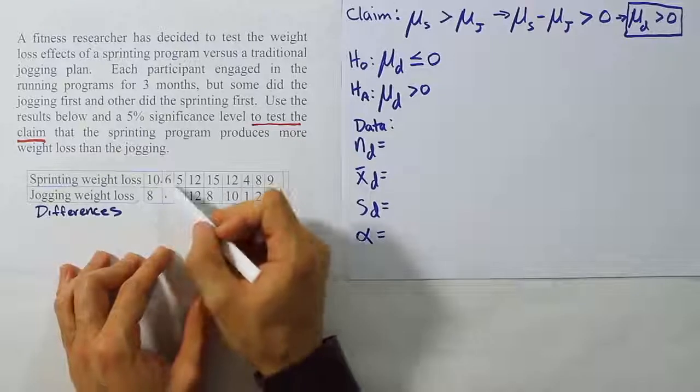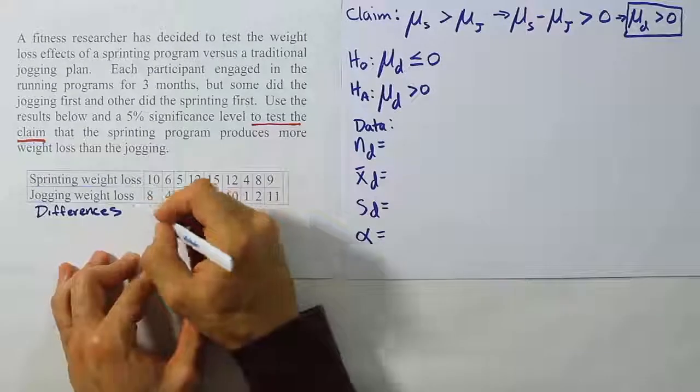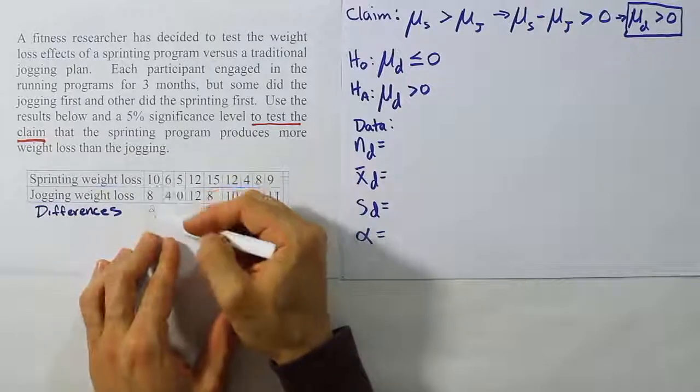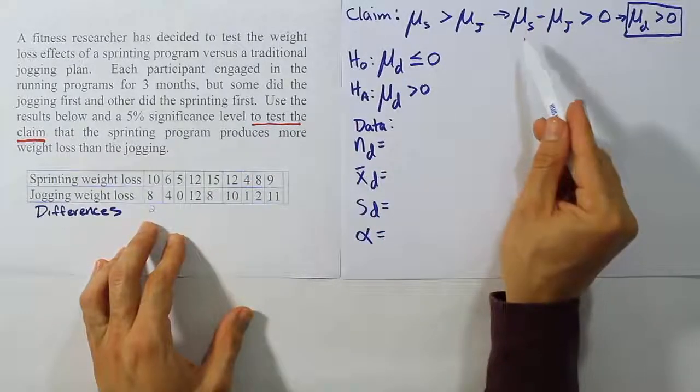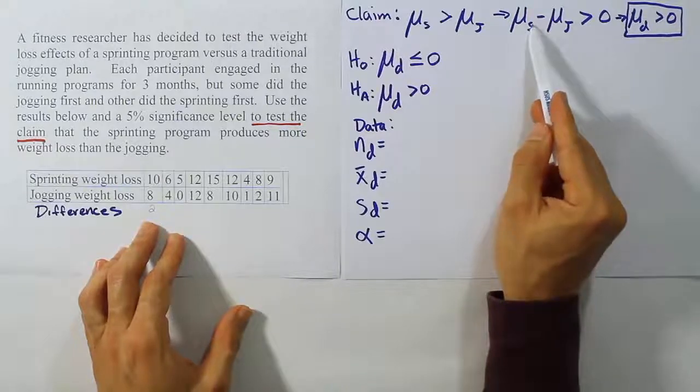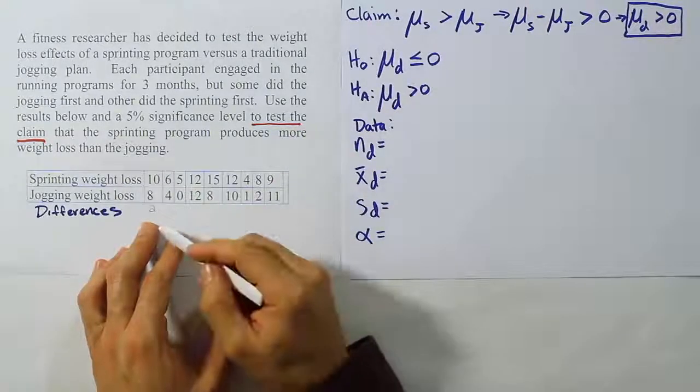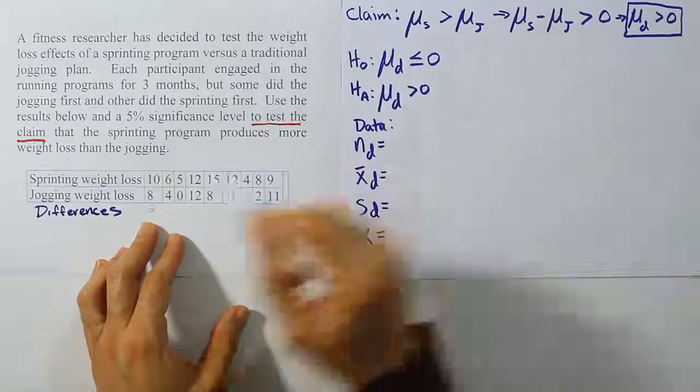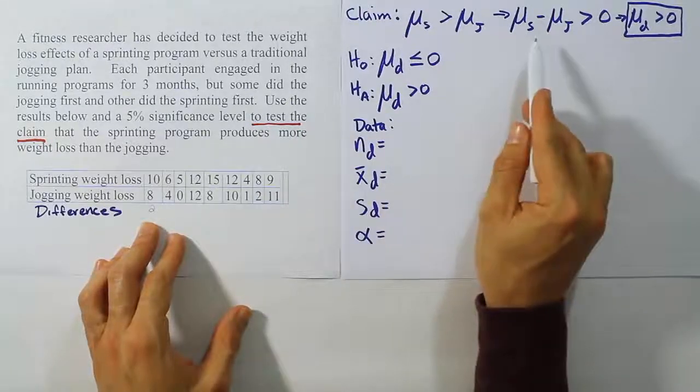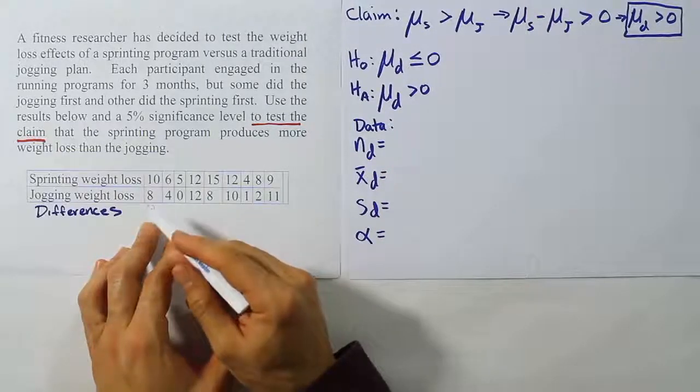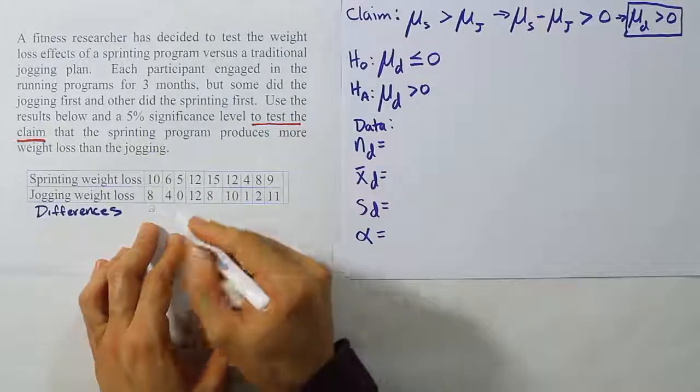We're gonna do the subtraction just like we see it. So 10 minus 8, and we'll get the answer 2. Now if you notice how I'm doing this 10 minus 8, it's actually the same as the way I did it here. I did sprinting minus jogging, sprinting minus jogging. So I'm being consistent with how I wrote my claim. That's very important. If you do sprinting minus jogging in the way you write the claim, then that's how you should do the subtracting. If you don't do that, you're gonna end up with a test stat that's on the wrong side of the curve.